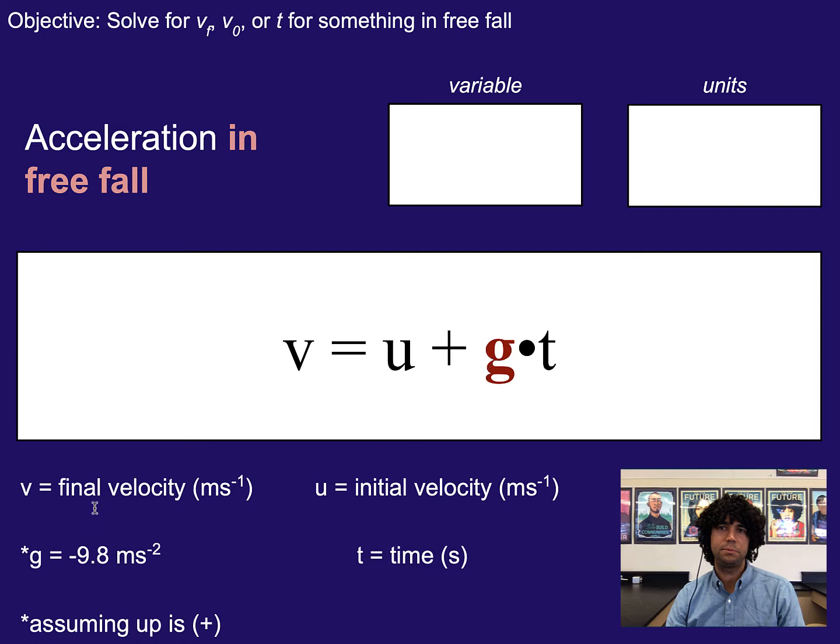Now keep in mind, gravity is always directed downwards. So you need to be conscious of whether or not you are choosing the downward direction to be positive or negative. If up is positive, then gravity is negative 9.8. If down is positive, then gravity is just 9.8. So just pay attention to direction on things to make sure you are consistent.